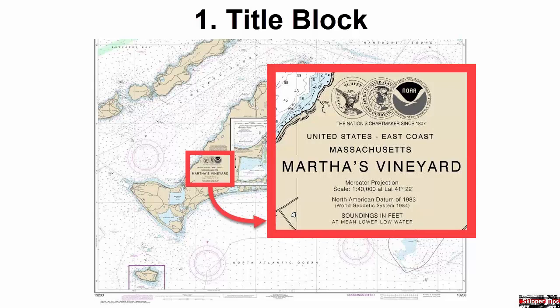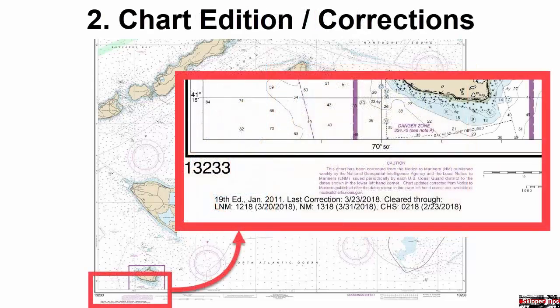Soundings and title information are shown next. On this chart, soundings are in feet at mean lower low water. Other charts may show soundings in fathoms or meters. Tidal datum on international charts often uses the more conservative lowest astronomical tides, called LAT. Some charts use mean sea level. Always check your chart datum before you start to navigate on any chart.